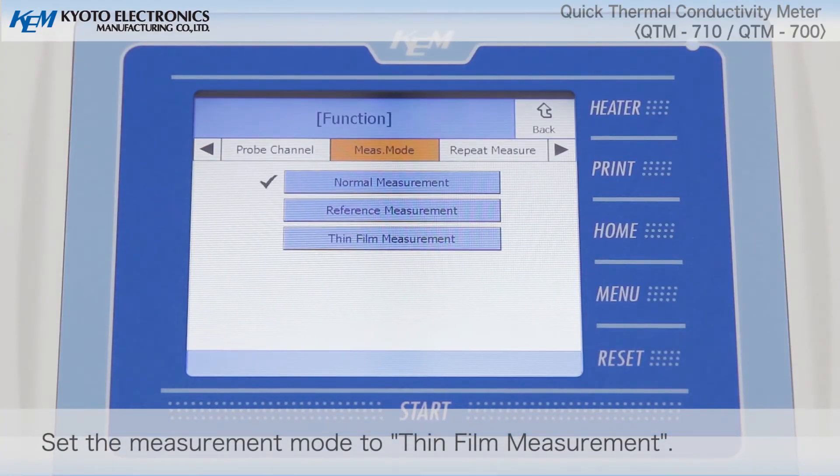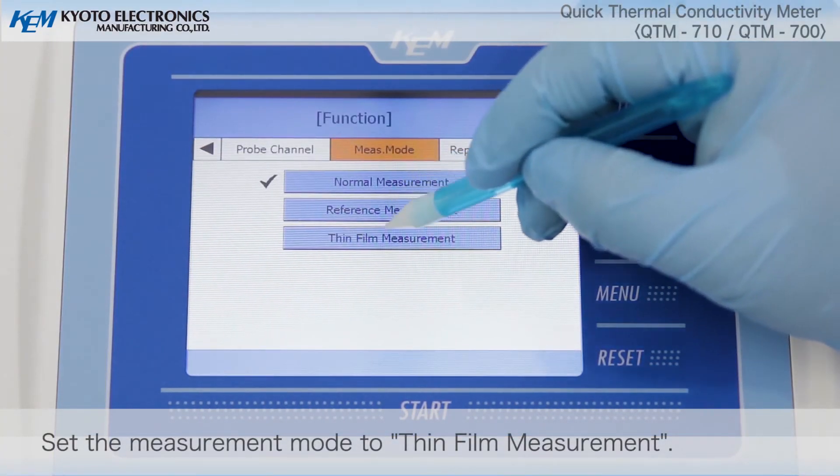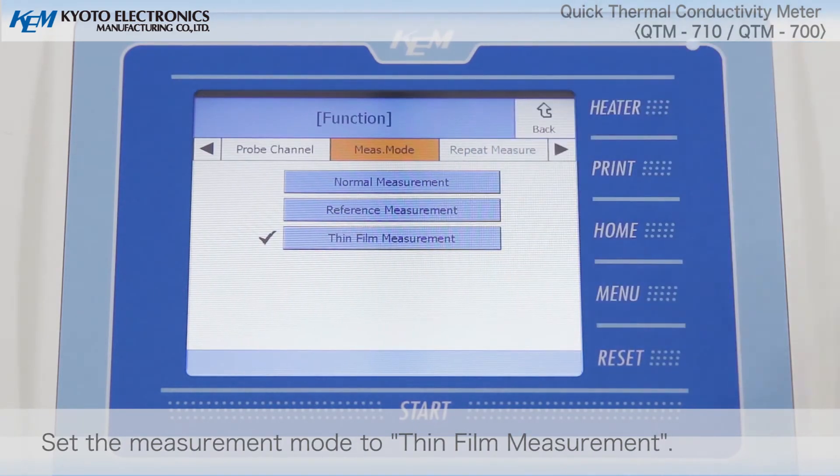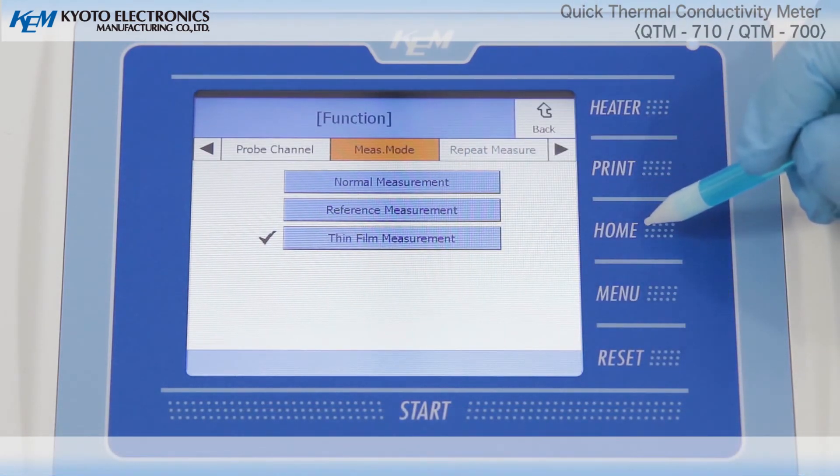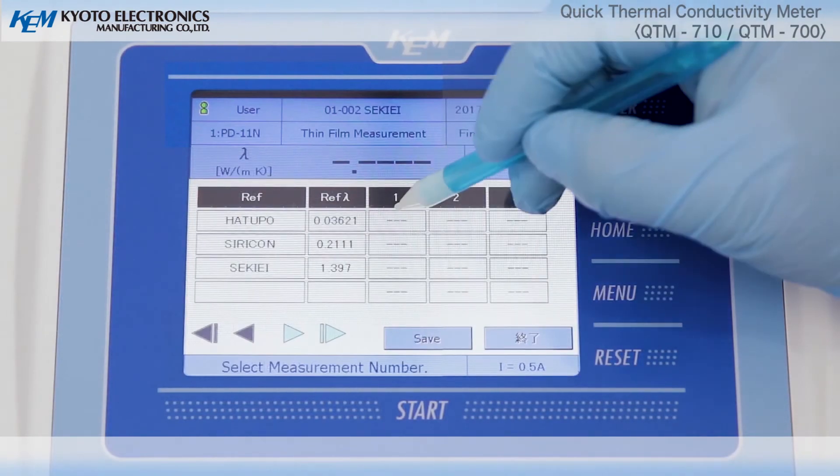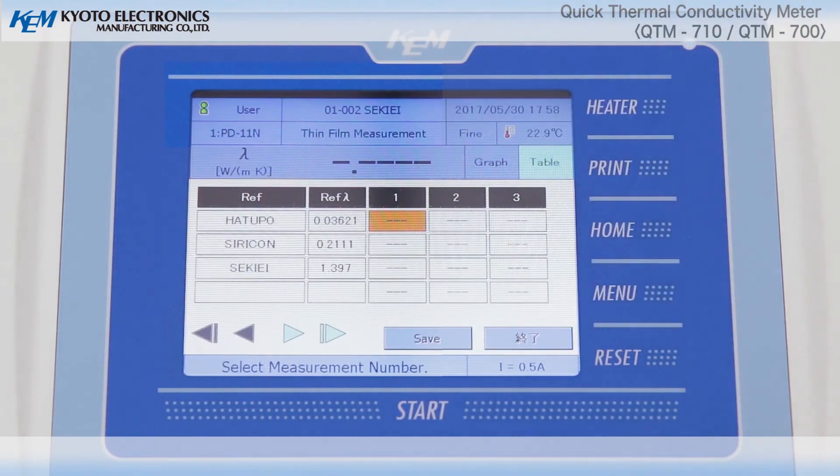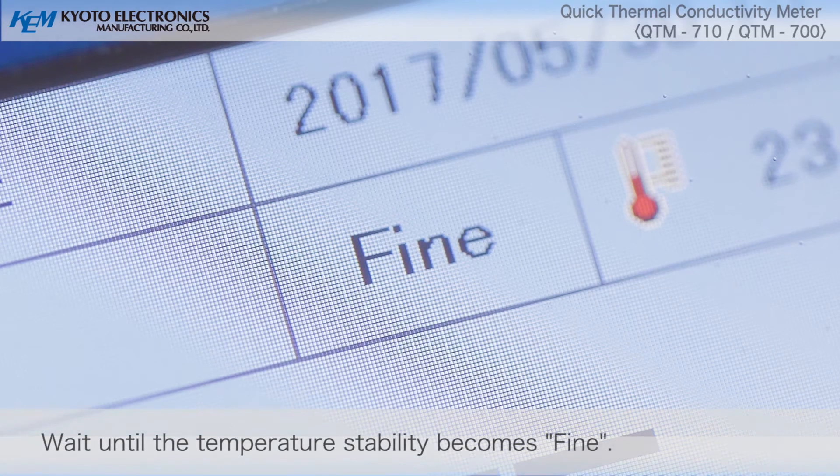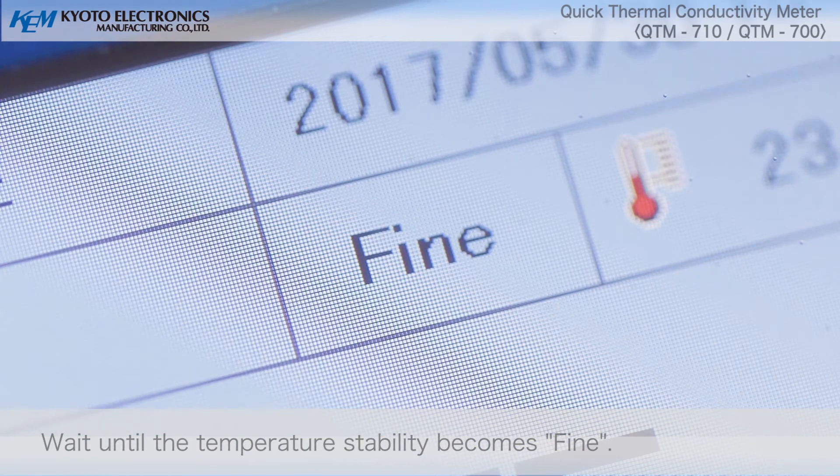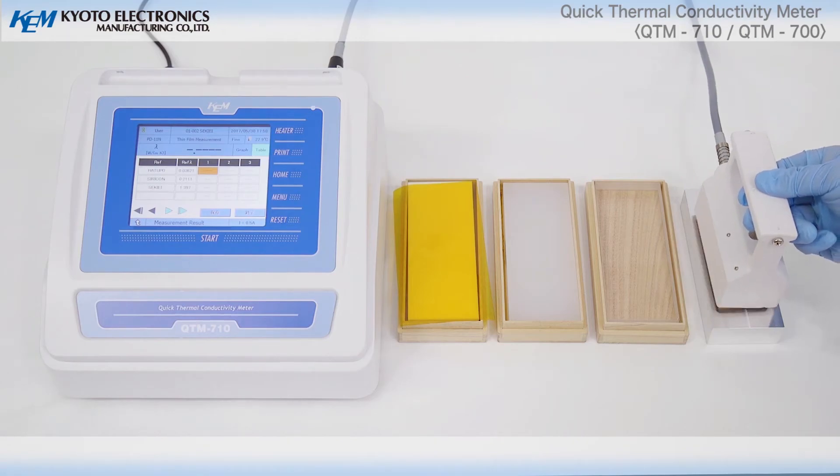Set the measurement mode to thin film measurement. Wait until the temperature stability becomes fine. Place the probe on the sample.